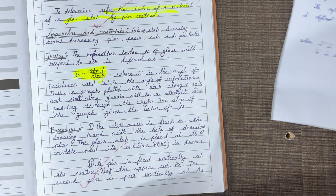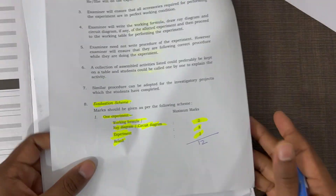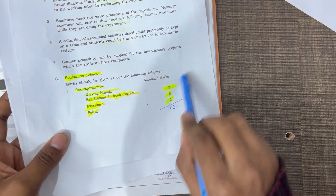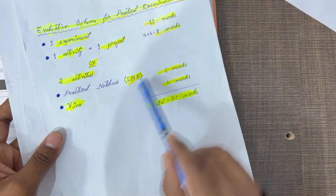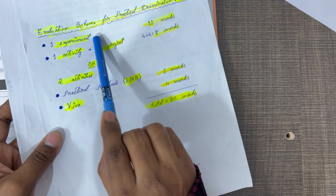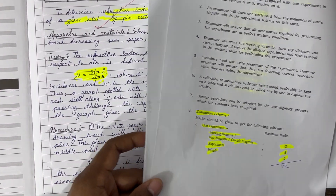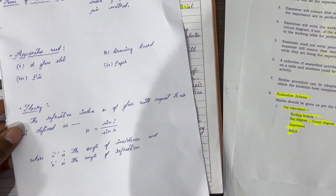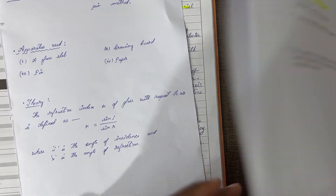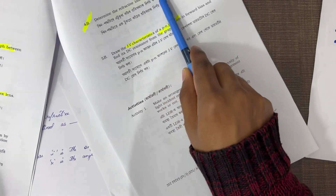Here is the last question. In this experiment, you have to write the theory. For 12 marks, you need to complete the experiment. For 8 marks, there is a practical notebook, and 6 marks are already given. So next, you have the remaining experiment activity. For this glass lab experiment, we have determined the refractive index.